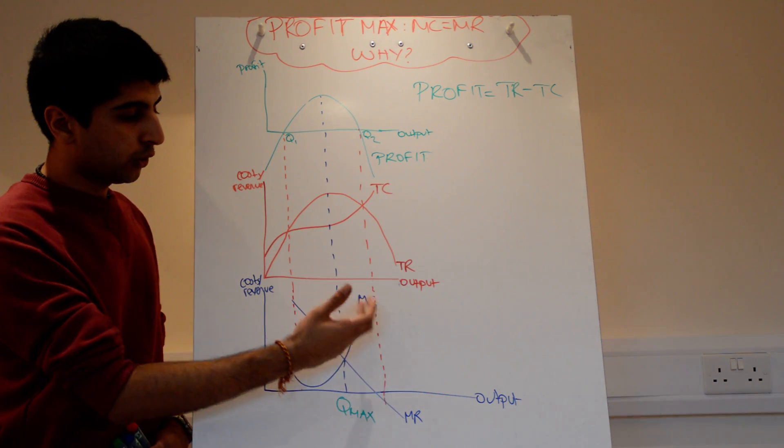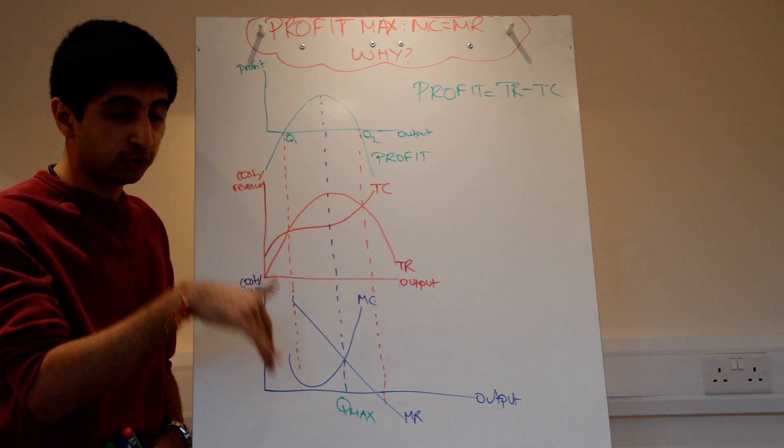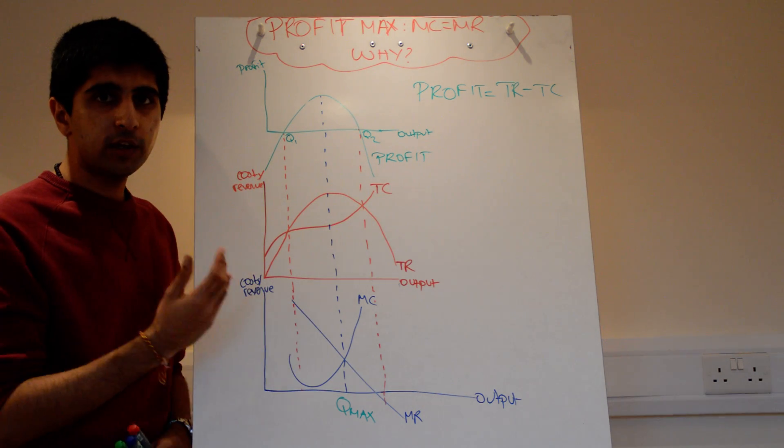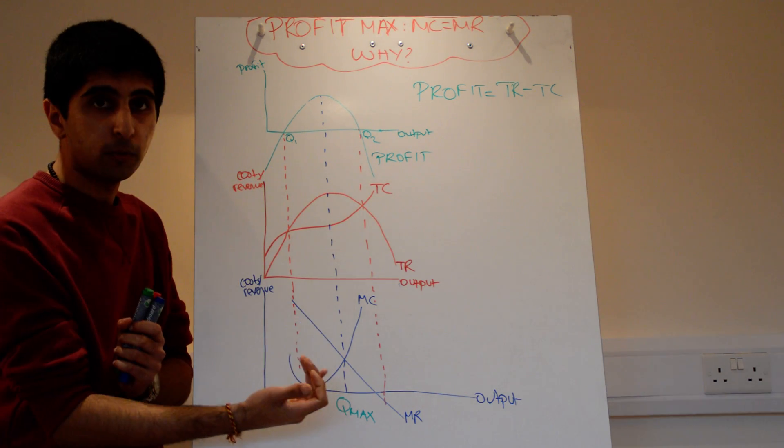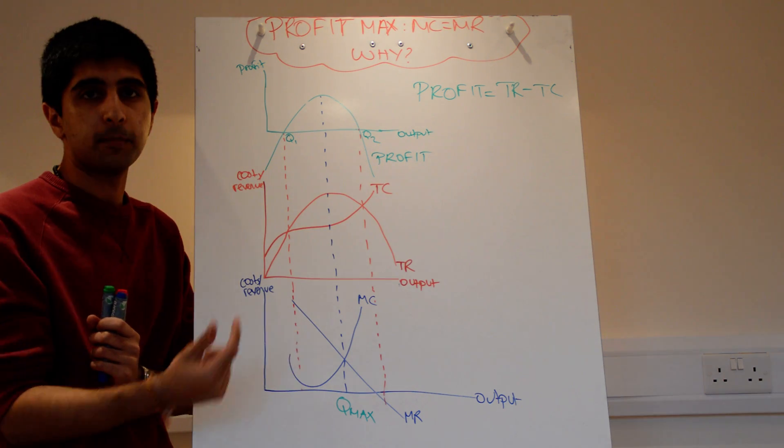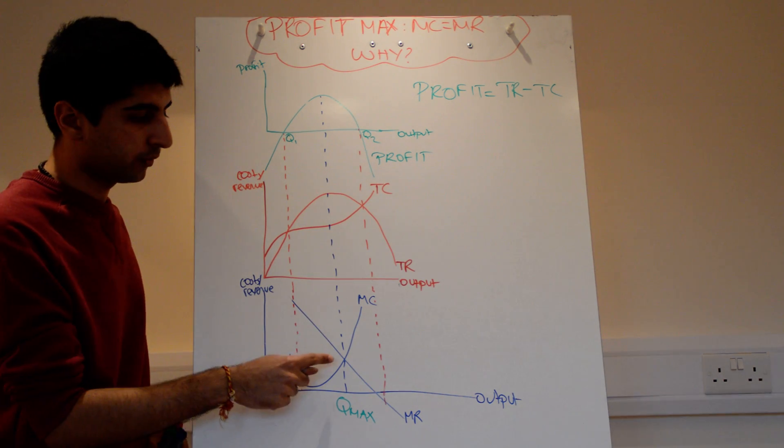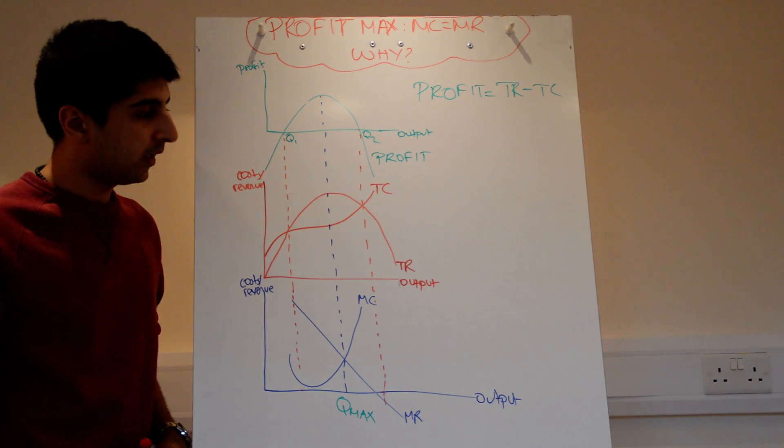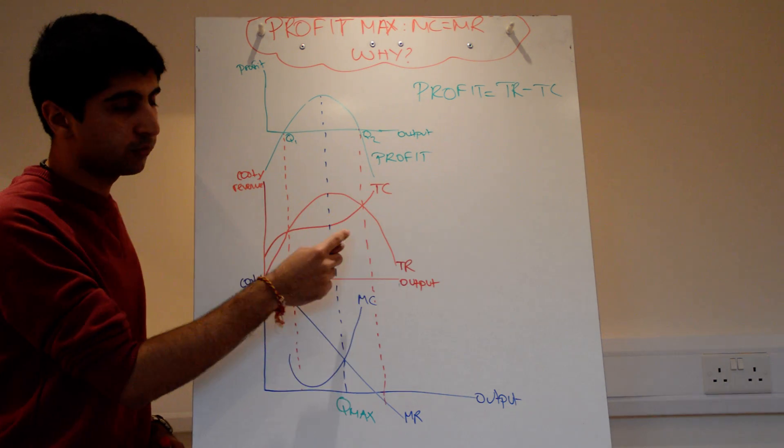We know any points to the right, cost is more than revenue, so we're going to be reducing the profit. And to the left, we know we can increase profits by producing more because the marginal revenue is always greater than marginal cost. Okay, so to maximize profits, we need to produce at MC equals MR. Very simply, to go to the total cost and total revenue curve.